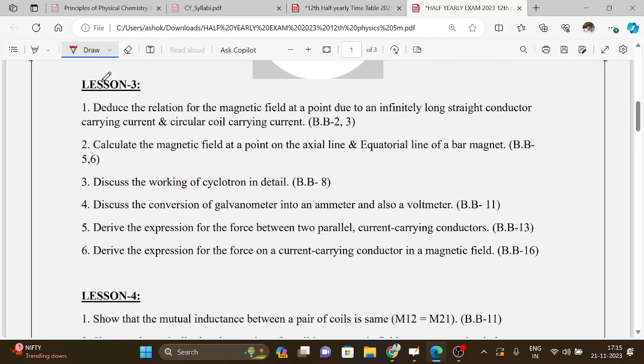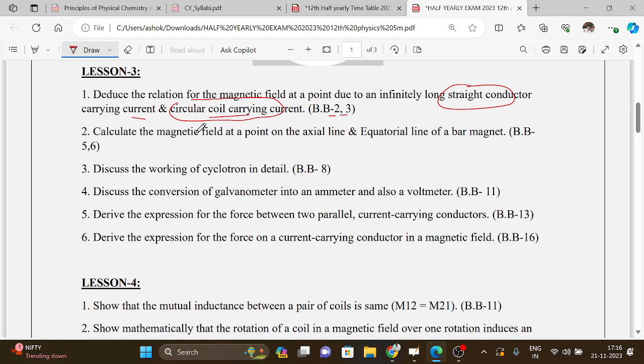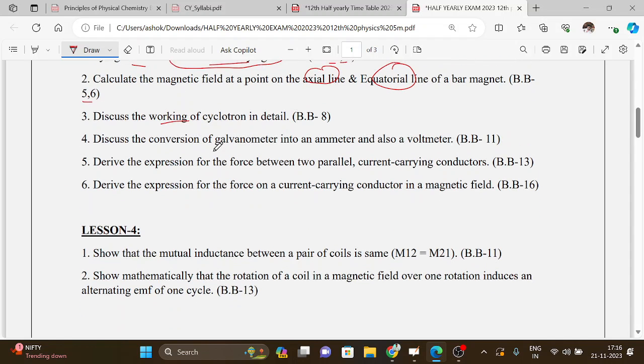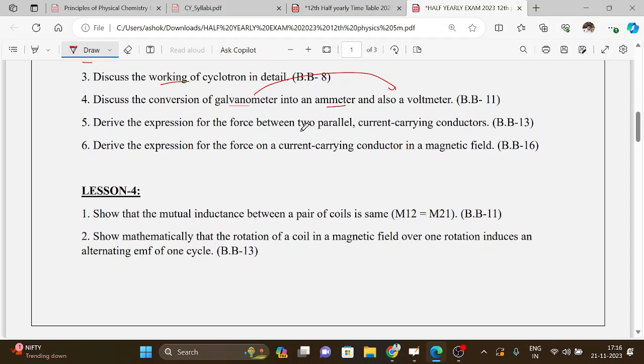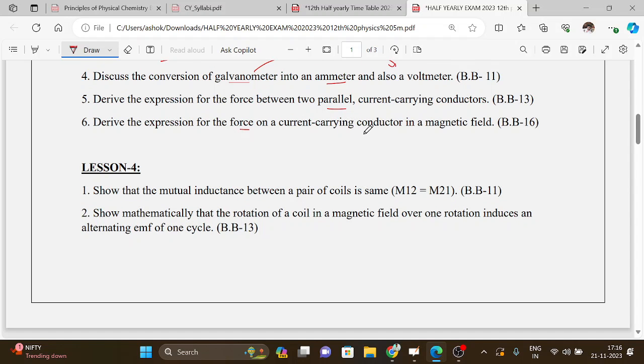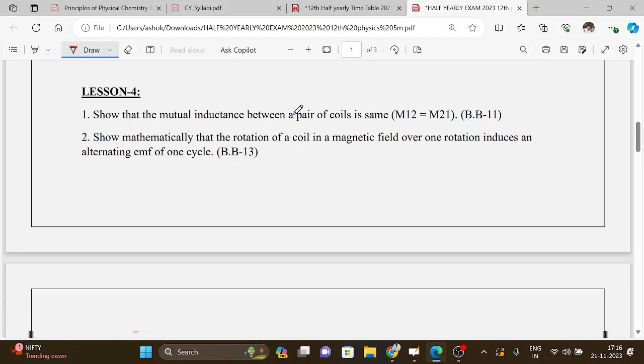Lesson 3: Deduce a relation for magnetic field at a point due to an infinitely long straight conductor carrying current and circular coil conductor, book back second and third questions. Then calculate the magnetic field at a point on the axial line and equatorial line, book back 5 and 6. Working of cyclotron, conversion of galvanometer into ammeter and galvanometer into voltmeter. Then expression for force between two parallel current carrying conductors. Derive the expression for force on a current carrying conductor in magnetic field.